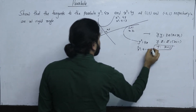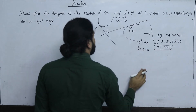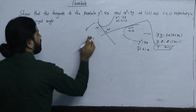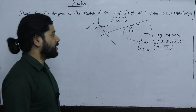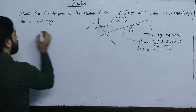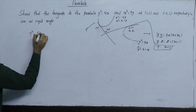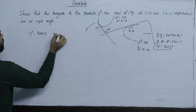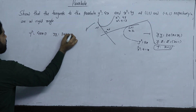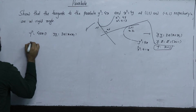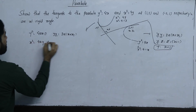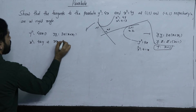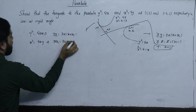The general tangent equation for y² = 4ax is y·y1 = 2a(x + x1). For x² = 4ay, the tangent equation is x·x1 = 2a(y + y1).